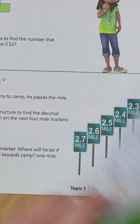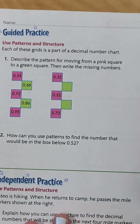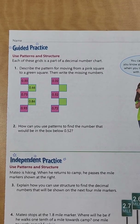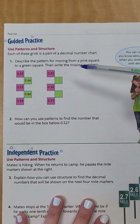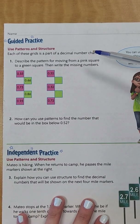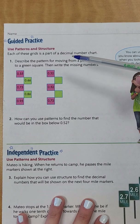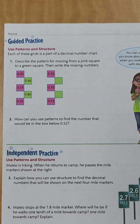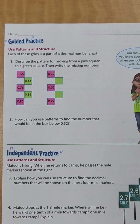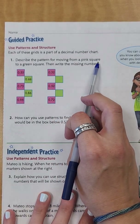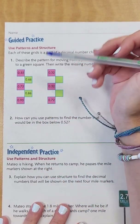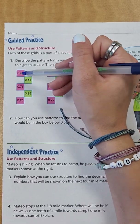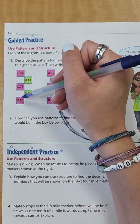Let's go ahead to the guided practice on the next page. Now we're looking at page 33. It says: describe the pattern for moving from a pink square to a green square, then write the missing numbers. We have fifty-five hundredths, seventy-five hundredths, and ninety-five hundredths.